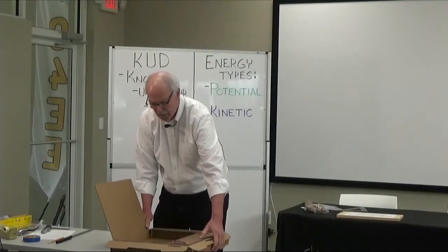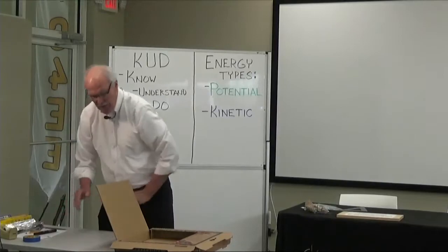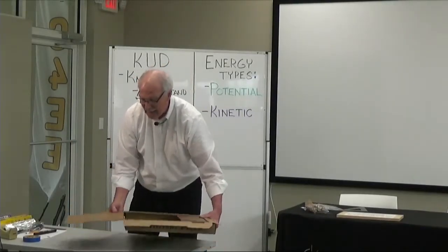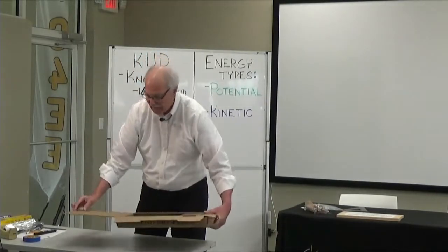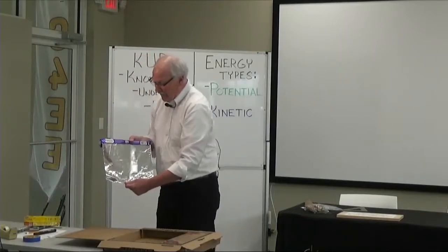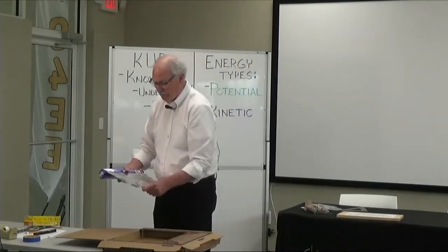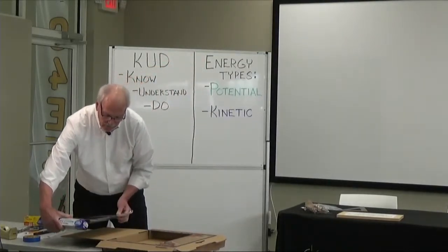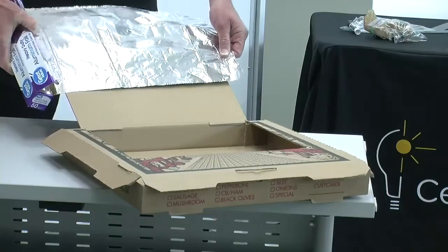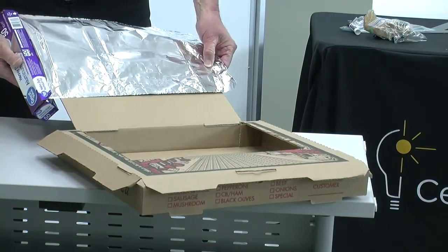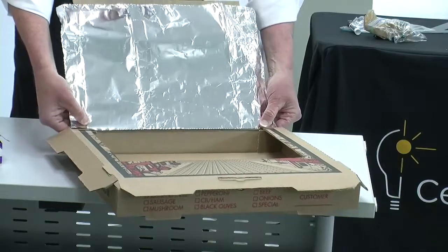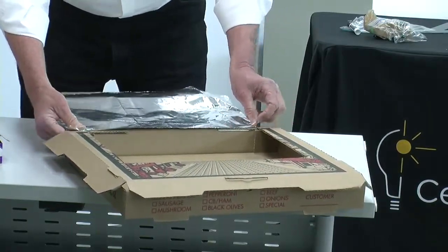Now we need to put the aluminum foil on the reflective surface. Bend the flap back — be sure you haven't cut the hinge on the back. Take the aluminum foil and work with the shiny side, not the dull side. Take out enough aluminum foil to cover the flap, plus about an inch on either side. Then place the foil and bend it around the edge of the flap.